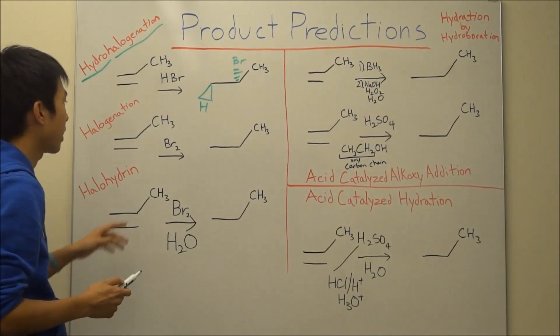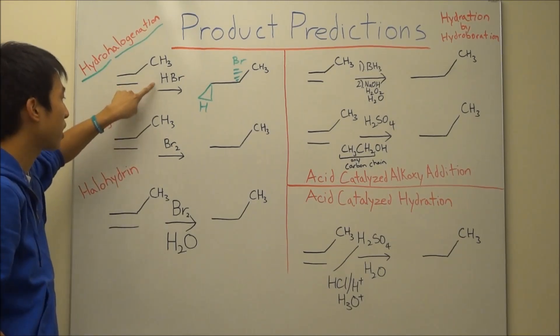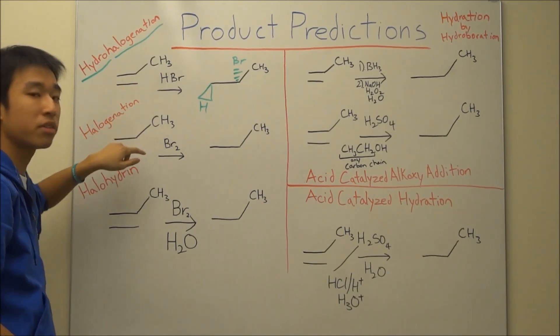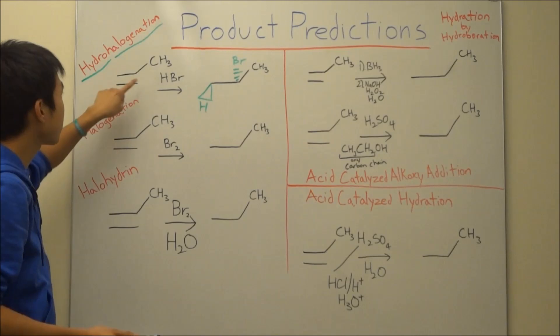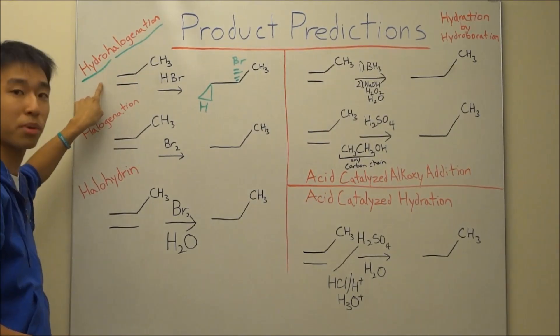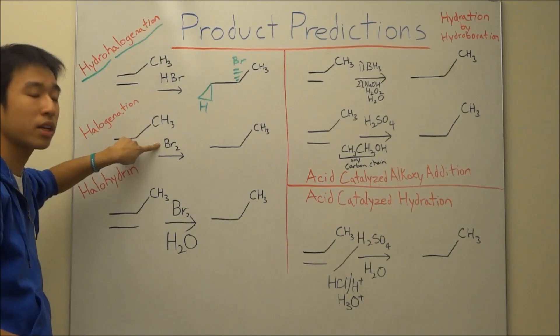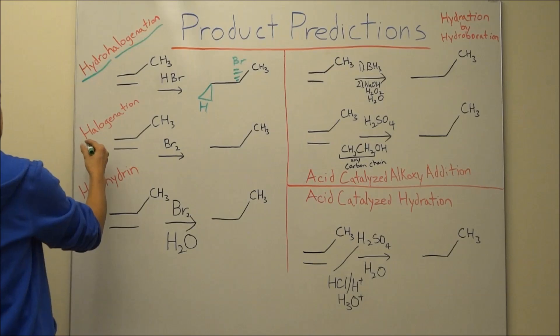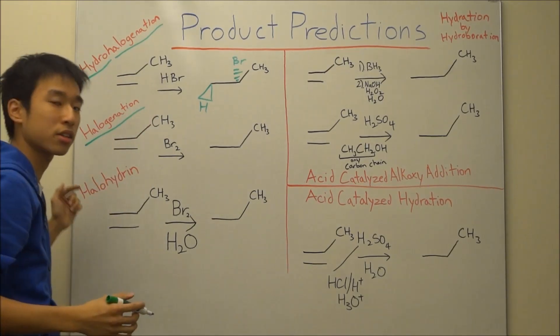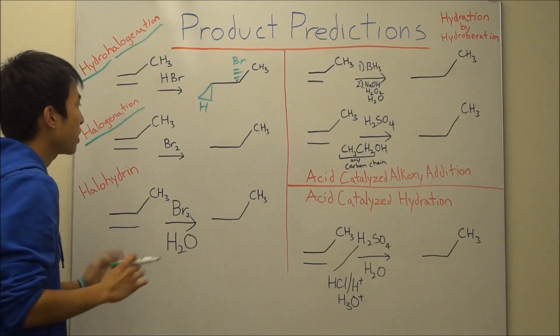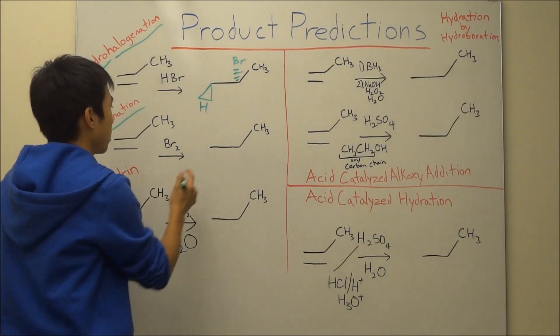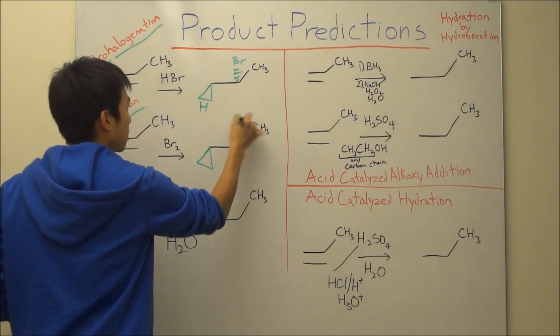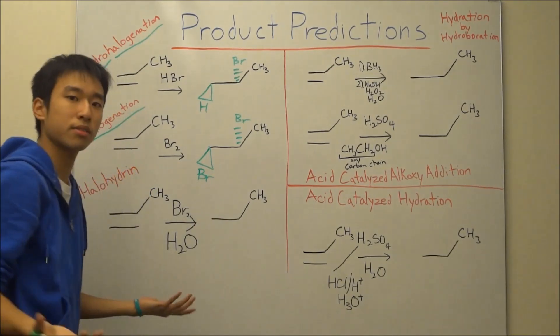All right. So the next one here, this kind of looks like before. We have Br2 again, and it kind of looks like hydrohalogenation. But the reason why it's not hydrohalogenation is because you're missing that hydrogen here that made it a hydro reaction. This one here, because you're only working with halogens, you use the reaction halogenation. And hence the name, just halogens. So same thing again, your bromines still get added on. The only difference is that instead of the hydrogen, you have bromines. And that's it.